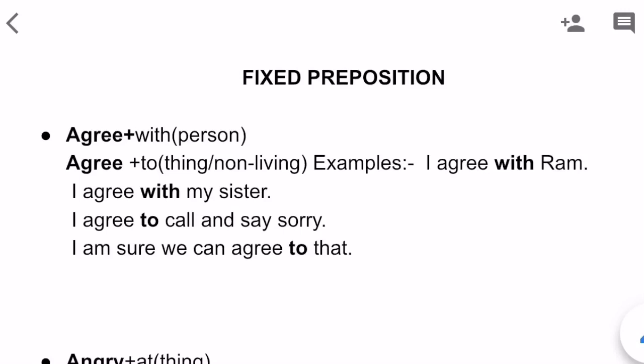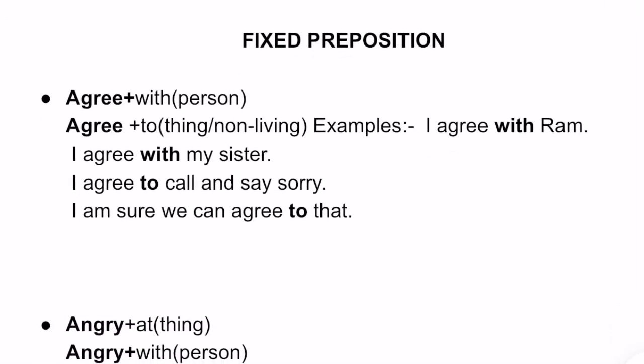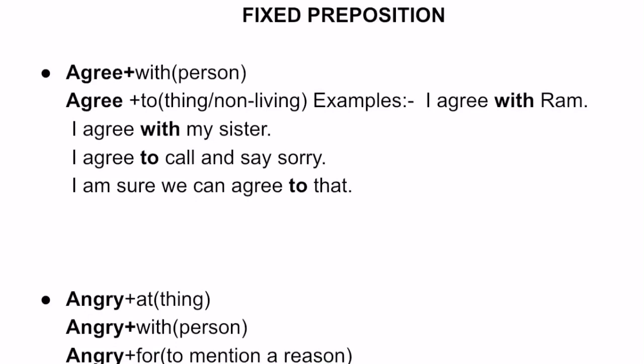I am taking the very first word: 'agree.' We know that with 'agree,' we can use both the preposition 'with' as well as the preposition 'to.' But the conditions under which they appear differ.